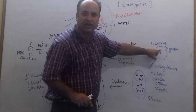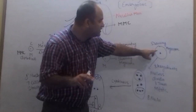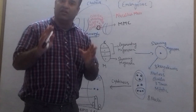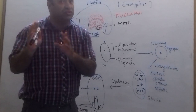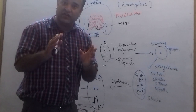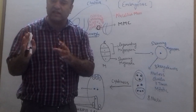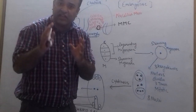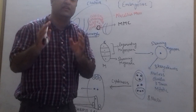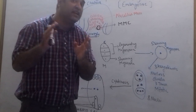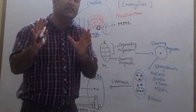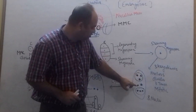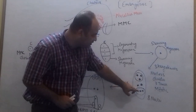In this surviving megaspore, karyokinesis will take place. One karyokinesis results in two nuclei, two karyokineses result in four nuclei, and three karyokineses result in eight nuclei. So three karyokineses means we will get eight nuclei.